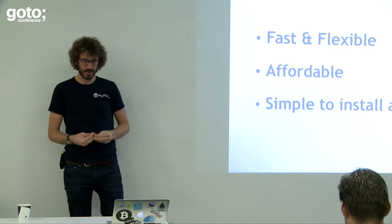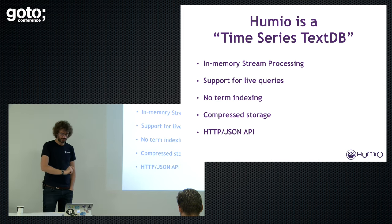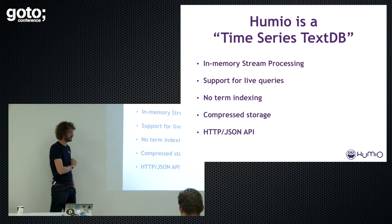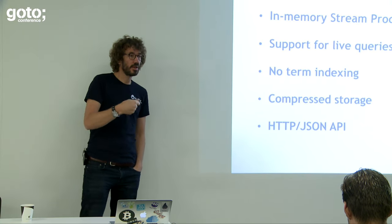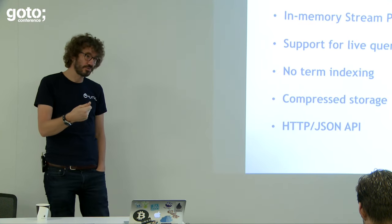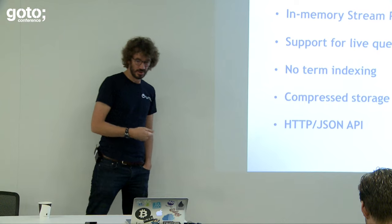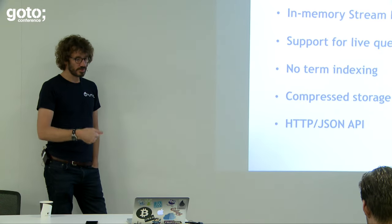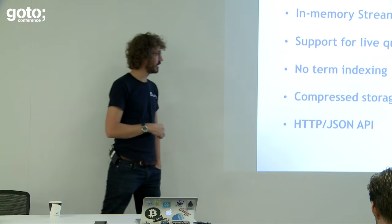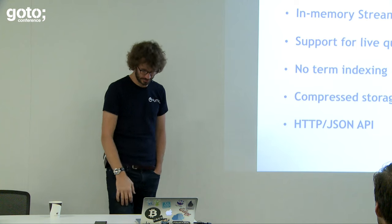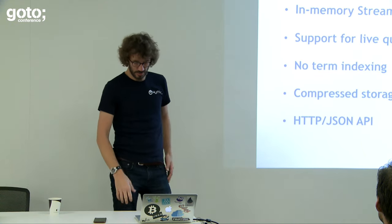At the core, Humio is a time-series text database. It's an in-memory stream processing system, drawing on idioms from financial high-frequency trading systems like KDB+, where instead of doing a lot of indexing upfront, we are very fast at brute-force processing data with very simple high-level indexing — time is essentially the only primary index. The engine exposes an HTTP JSON API, and we build the front-end on top of that.